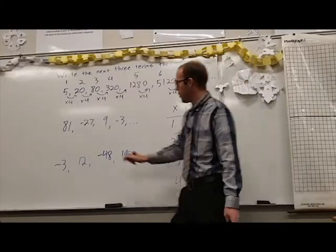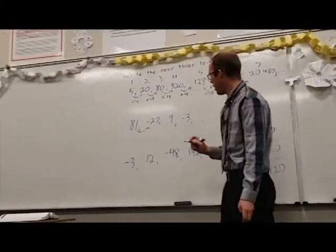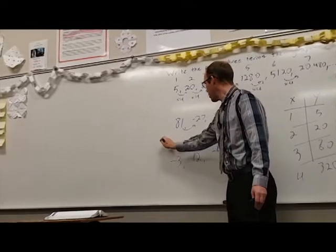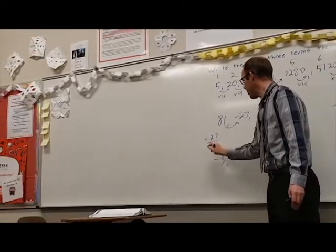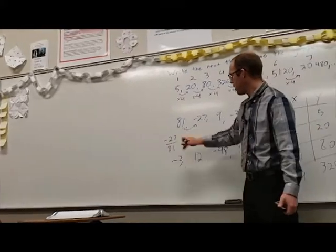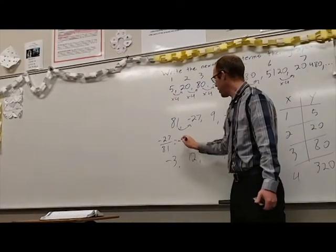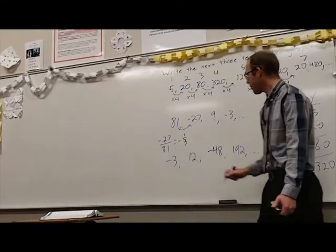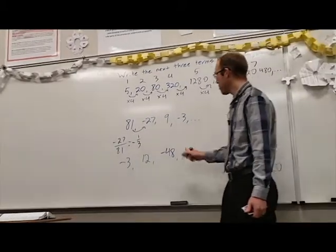On this next one we're going to try and find the pattern and I'm going to use our little trick that we used in the last section of dividing. Negative 27 divided by 81 happens to be negative one-third. So that gives us our multiple from term to term.